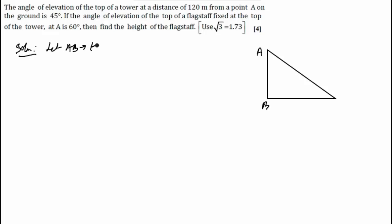Let AB be the tower where A is the top of the tower. If the angle of elevation of the top of the flagstaff fixed at the top of the tower, so there is a flagstaff at the top of the tower at A, is 60 degrees.